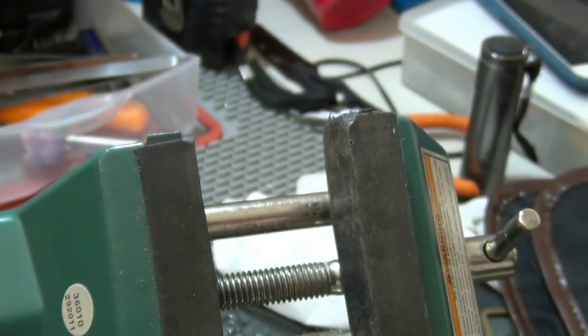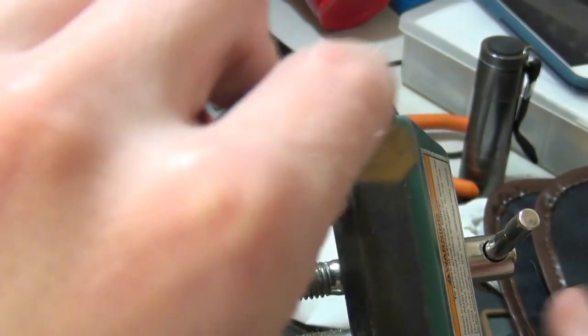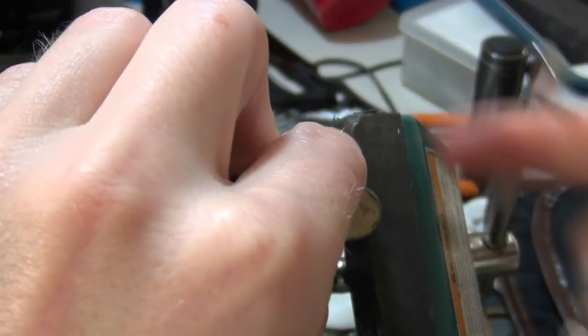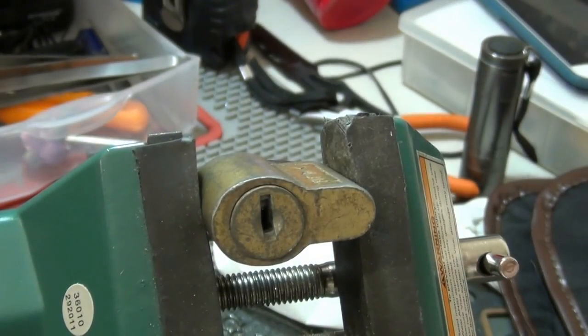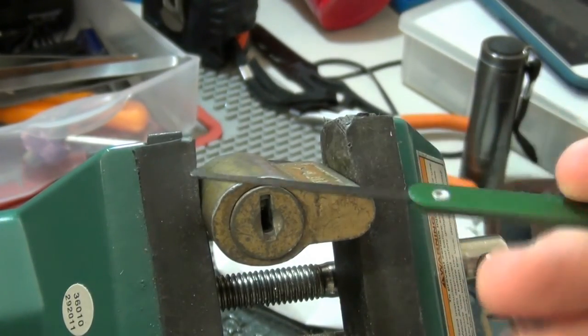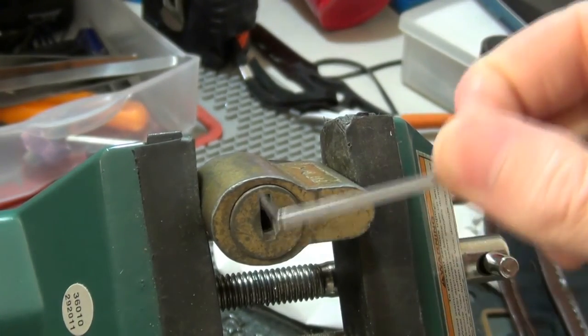I don't have a key to it, so we'll have to pick it open. Since it's a wafer lock, I'm going to be using a half ball pick instead of a hook or anything.